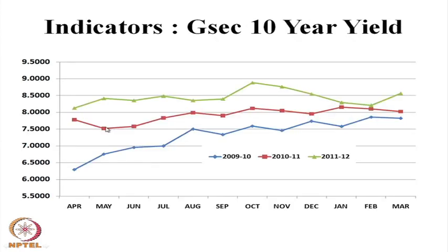The next indicator is the interest rate. Taking the Government of India 10-year yield from 2009–10 to 2011–12: in 2009–10, the yield was not very high. With the progress of the financial crisis, in 2010–11 the interest rate and yield increased. By 2011–12, the interest rate increased further. From 2009–10 onwards, the interest rate has been increasing — from approximately 6.42 percent in April 2009–10 to around 8.42 percent, an increase of nearly 200 basis points.